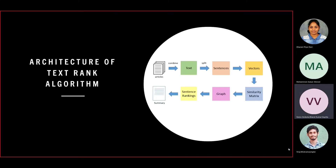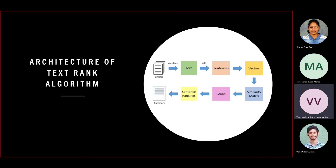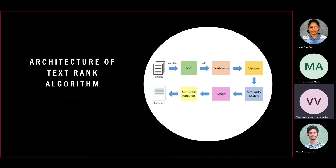For the TextRank algorithm, we have used GenSim, a free Python library designed to automatically extract semantic topics from documents. The GenSim implementation is based on the popular TextRank algorithm. It is an open source vector space modeling and topic modeling toolkit. The TextRank algorithm is similar to the PageRank algorithm, the only difference being that the sentences in TextRank replace the web pages in PageRank.